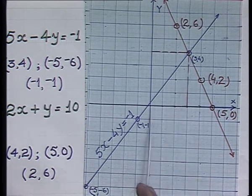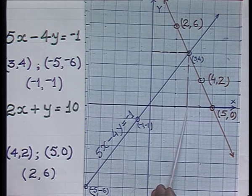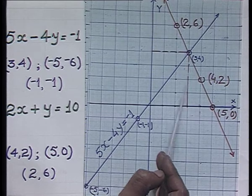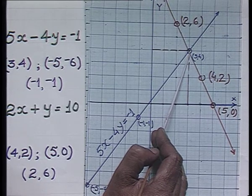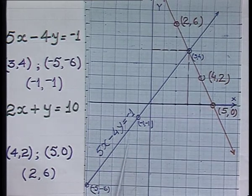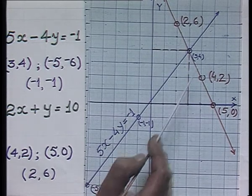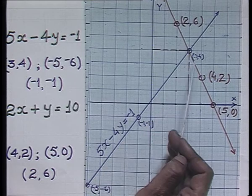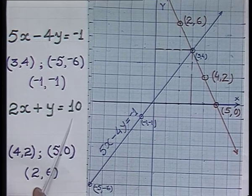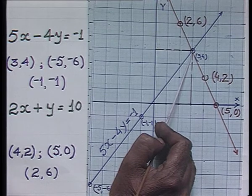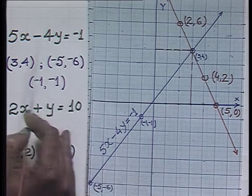The two lines are intersecting at one point. To find the ordered pair at this intersection, I drop perpendiculars to both axes. Moving 3 units horizontally and 4 units up, this point has ordered pair (3, 4). This point lies on both lines, meaning it satisfies both equations: 5x minus 4y equals minus 1 and 2x plus y equals 10.